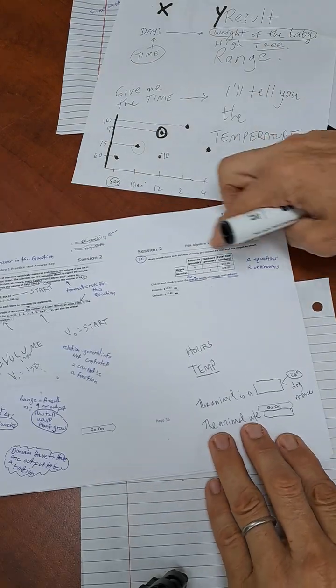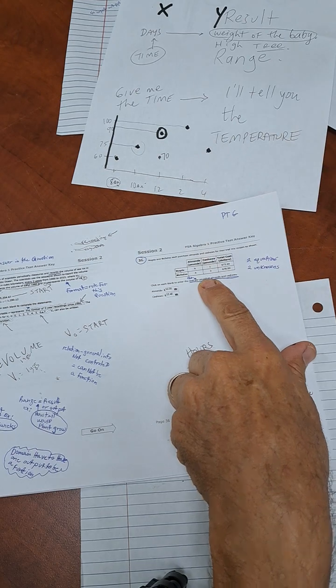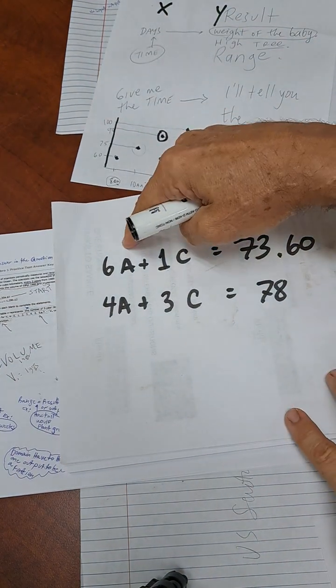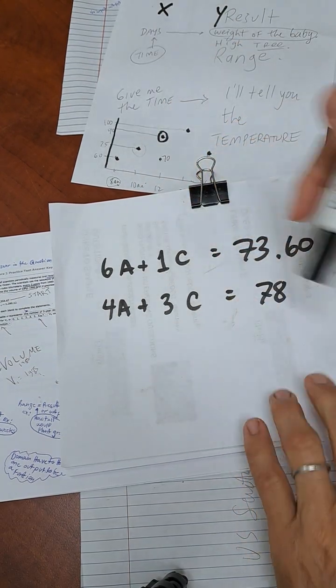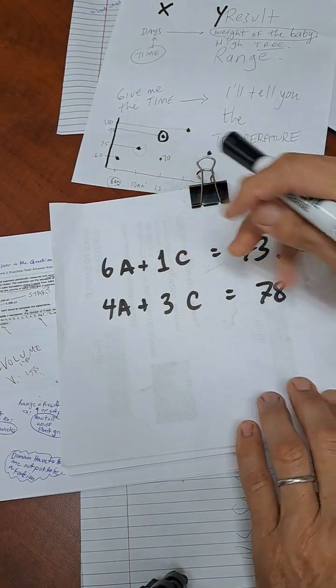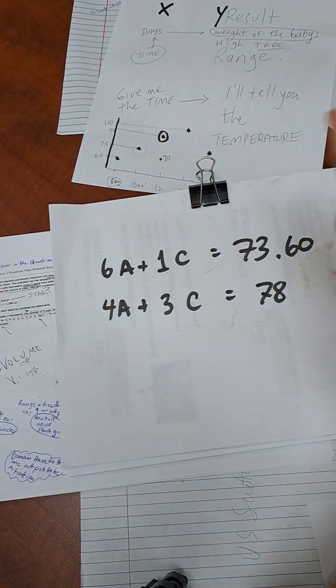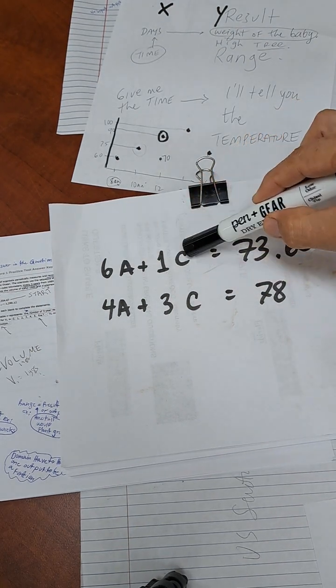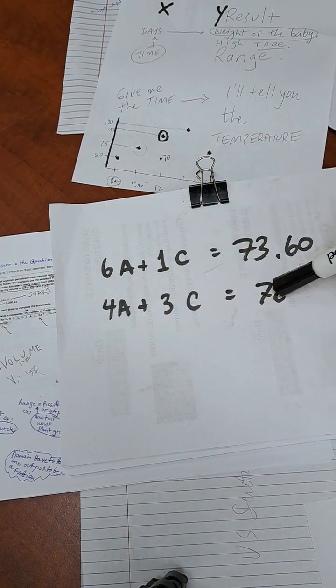Based on the information that they've put here, they say six pounds of almonds, one pound of cashews. So I came up with 6A + 1C. I could have written it out, but I'm just using A. Now we've got something that looks like a silly algebra problem. You've got a letter and another letter with a number. A letter, another letter, and a number.